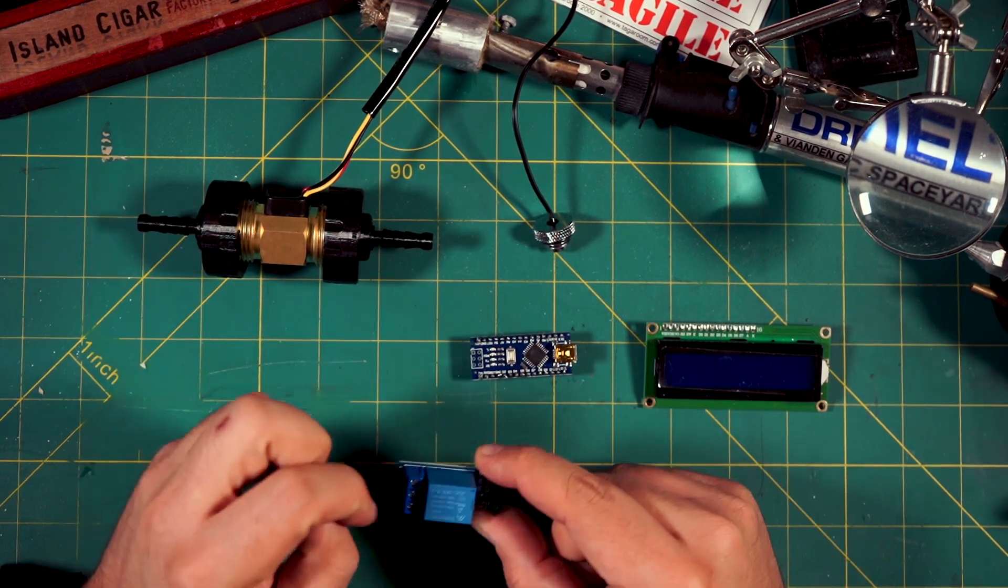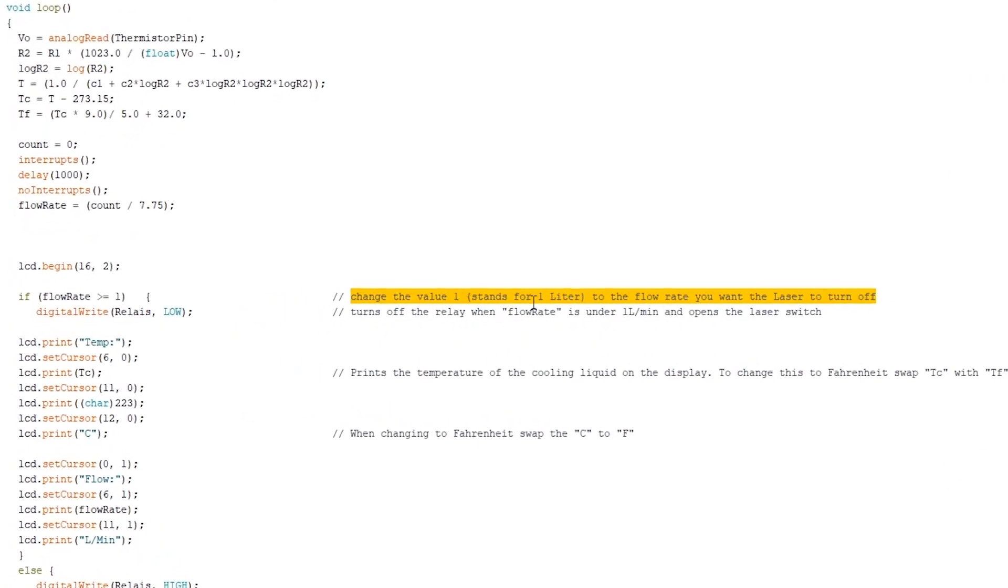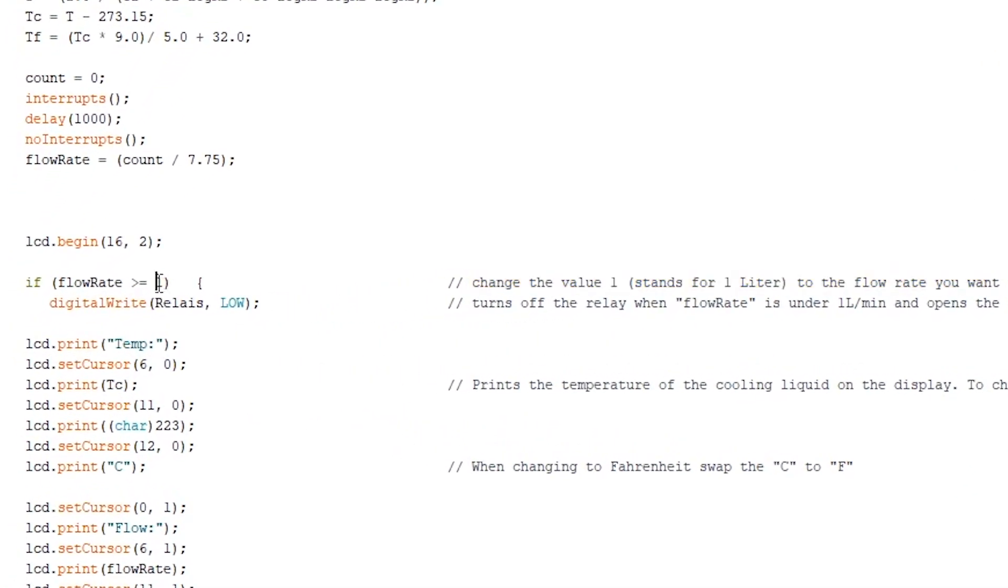Now, you will ask, why one liter? Well, that's simply because there are different pumps out there, different flow rates. So you can tweak this threshold in software by simply changing this value to the amount of flow rate that you think becomes critical. Of course, you can add some more code to this. For example, to set a critical temperature where the laser should turn off.